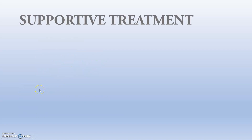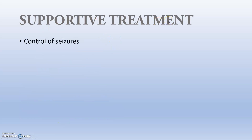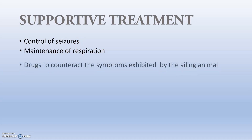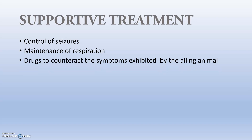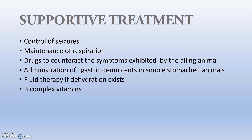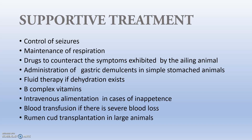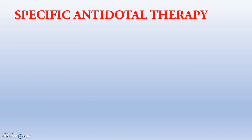The universal antidote using activated charcoal and magnesium oxide: for cattle, give 240 grams two or three times daily; for calves, two spoonfuls; for sheep, one spoonful. For supportive treatment, control seizures, maintain respiration with proper ventilation for adequate oxygenation, give proper hydration so the toxicant is eliminated through urine, administer drugs to counteract symptoms, give gastric antacids in simple-stomach animals, provide fluid therapy if dehydration exists, complex vitamins for normal GI flora, and intravenous alimentation or transfusion if there is severe blood loss.